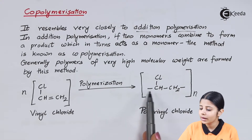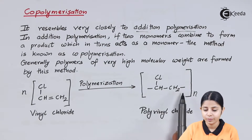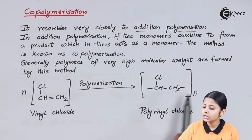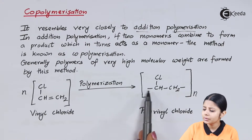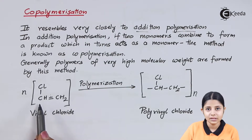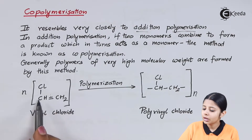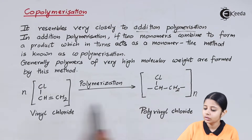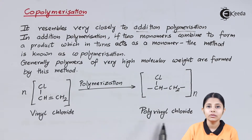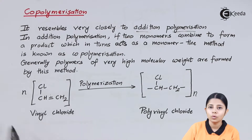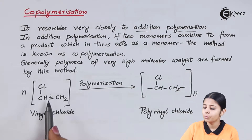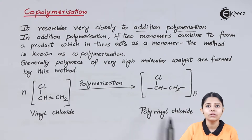After the double bond breaks, this carbon gets one valency and this carbon also gets one valency. To each carbon something can get attached. The double bond breaks, each carbon gets its valency, and the next monomer can attach itself. The only difference is that this was vinyl chloride, but this becomes polyvinyl chloride — because it was a monomer and now it has become a polymer. So N times vinyl chloride, on cleavage of the double bond, forms polyvinyl chloride.